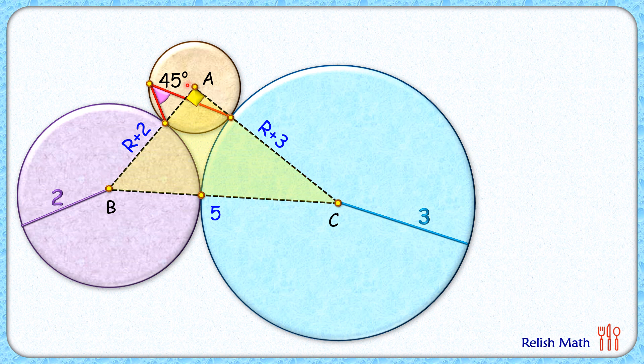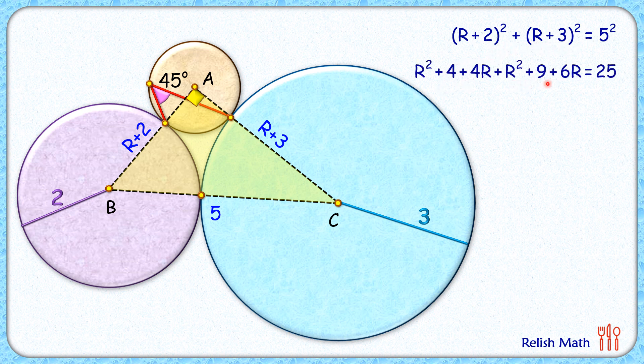Applying Pythagoras theorem, we get (r+2)² + (r+3)² equals 5² (hypotenuse squared). Opening the brackets: r² + 4 + 4r and r² + 9 + 6r equals 25.